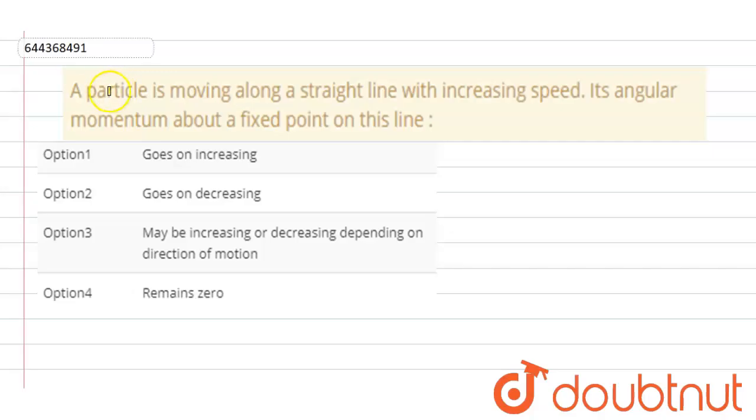Hello student, so the question is: a particle is moving along a straight line with increasing speed. Its angular momentum about a fixed point on this line is?